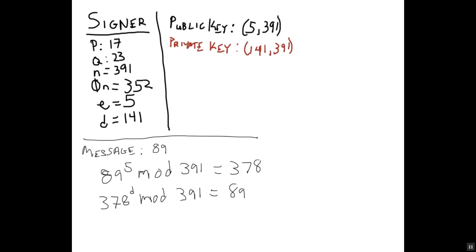So the message was able to be transmitted from one person to another without anyone in between knowing what the original message was. The signer was able to decrypt the message and recover the original m, which is 89.